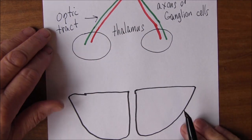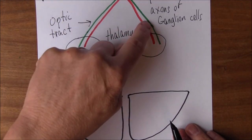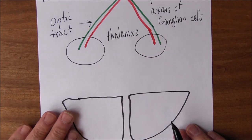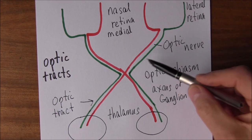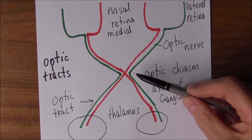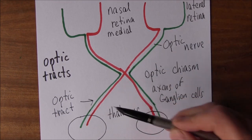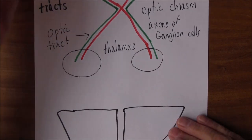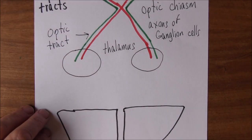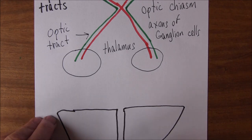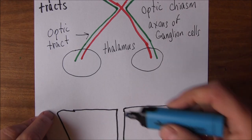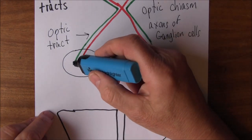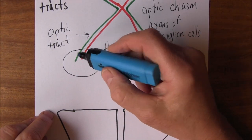Just before we pass on: the pathway from the chiasm to the thalamus — these are called the optic tracts. So we have the left and the right optic tract. It's optic nerve to the chiasm, and then technically it's optic tract after that.